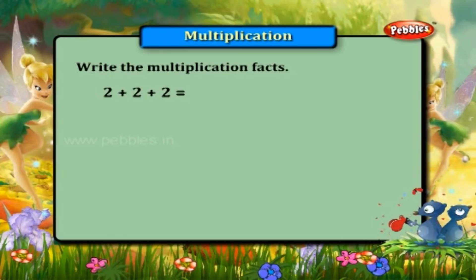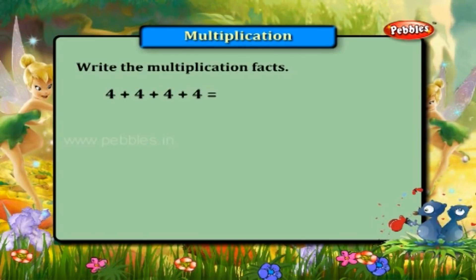Two plus two plus two is equal to three into two. Four plus four plus four plus four plus four is equal to five into four.